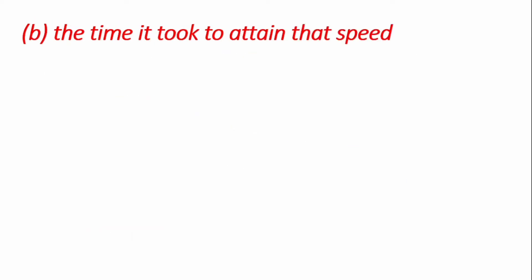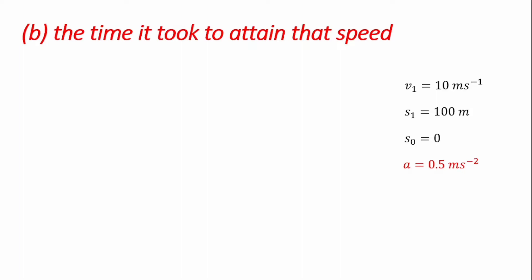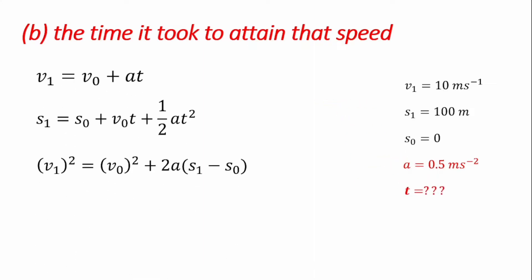From there, we go on to the next question that requires us to find the time it took to attain that speed. We recall all the variables given to us — V1, V0, and the constant acceleration of 0.5 m/s² that we just determined — but for this case we are looking for time. If we bring out the first formula, it has V1, V0, A, and T, and we're looking for time, so of course this can help us solve our problem.